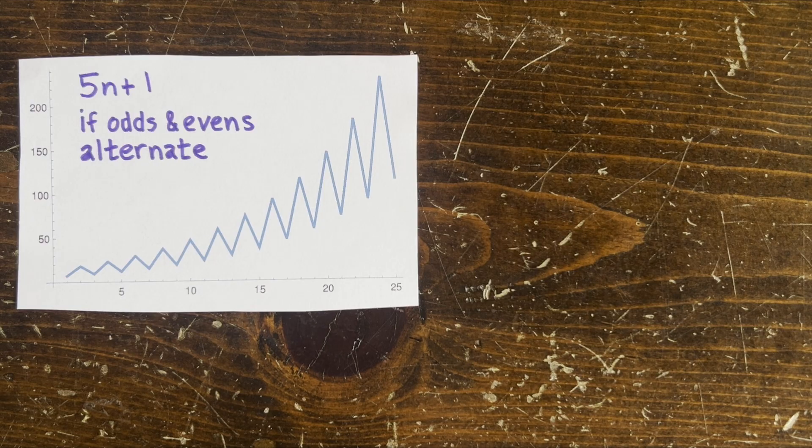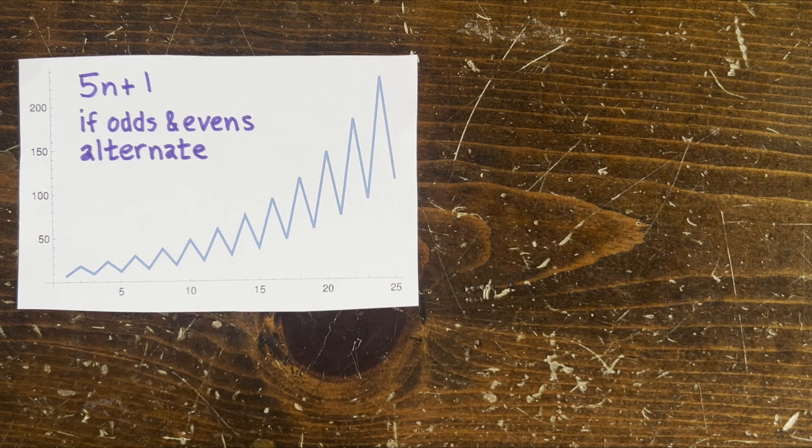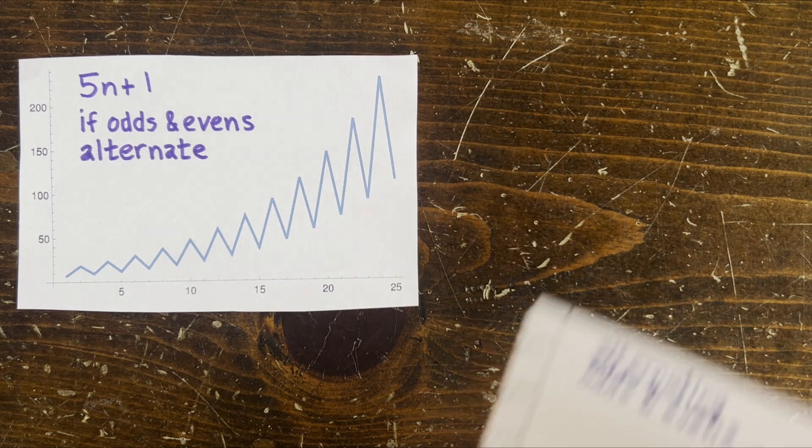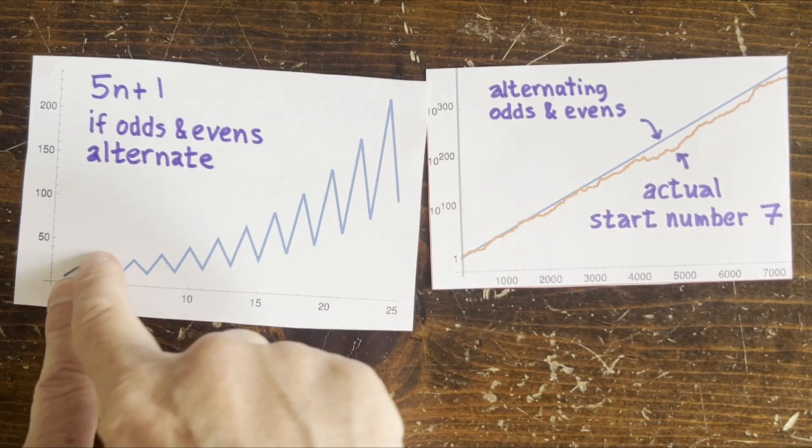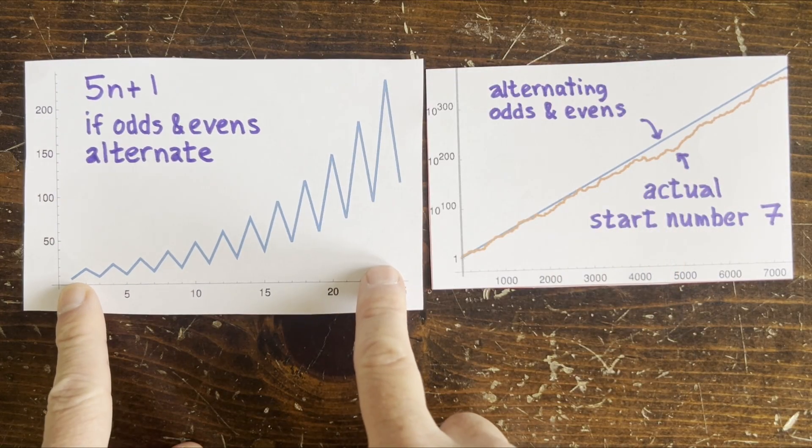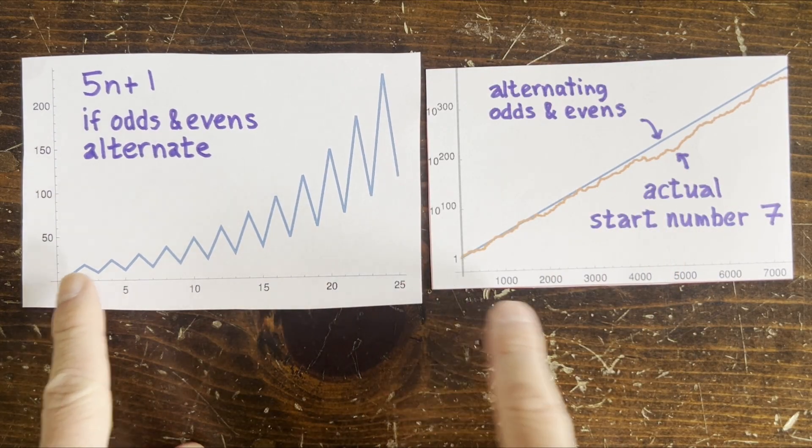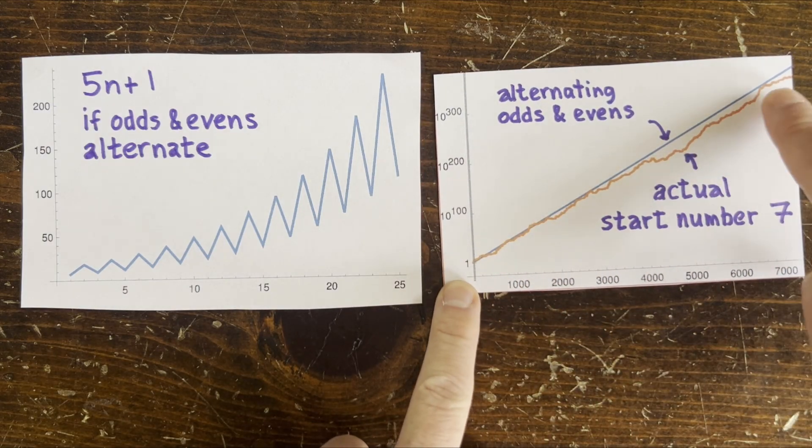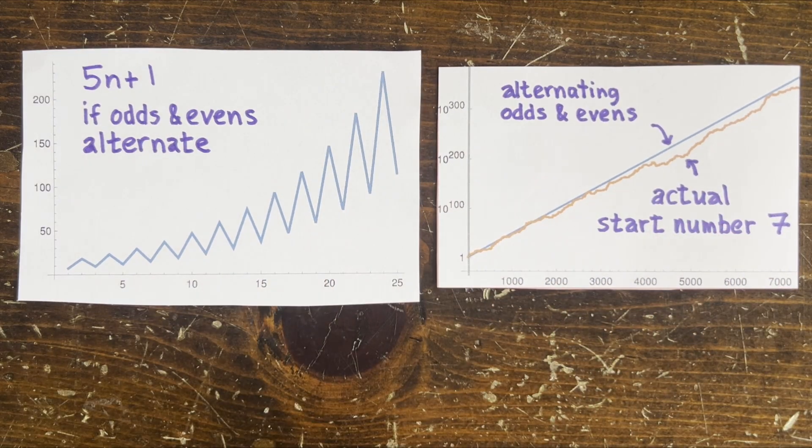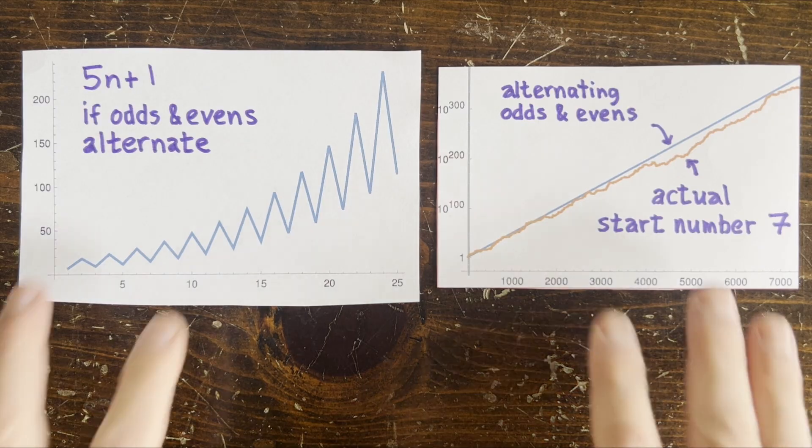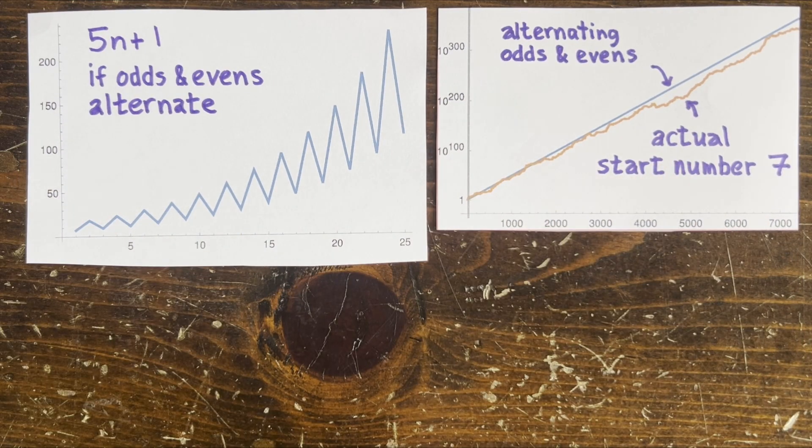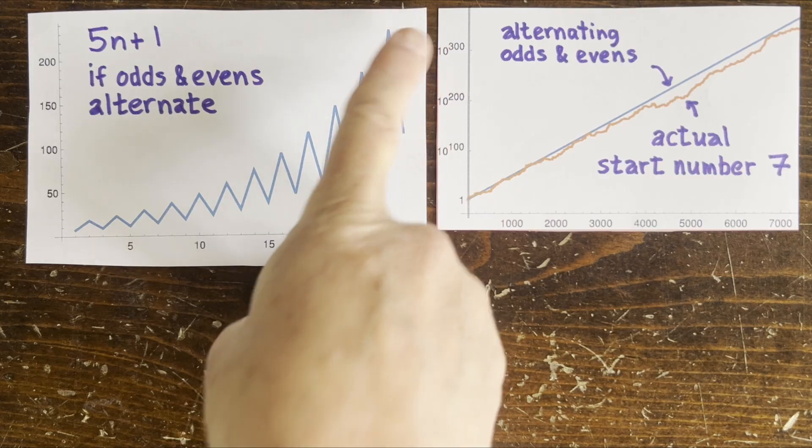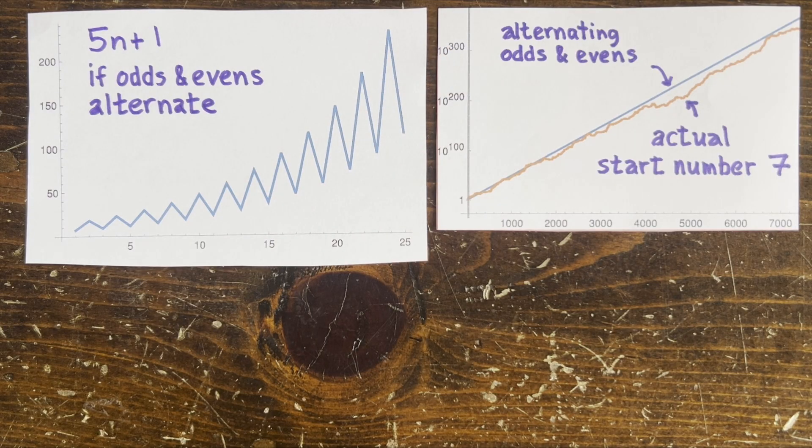In the 5n+1 problem, start numbers trend upwards instead of downwards. So, this blue line is going to grow so far so fast, we actually better put it on a log scale. And beside it is the actual start number 7, which in a few thousand steps has already hit a 300 digit number and shows no signs of coming back.